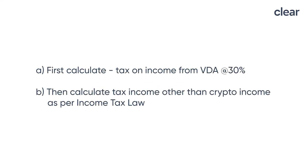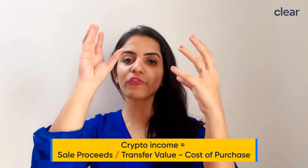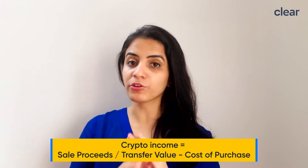Where the income of the taxpayer includes any income from the transfer of virtual digital assets, the total tax liability will be the aggregate of the tax calculated on crypto income plus the tax calculated on other income. First, calculate tax on crypto income at a flat 30% as per prescribed rules, then calculate the tax on other income as per the Income Tax Act. Crypto income is calculated by reducing the cost of acquisition from the transfer value.